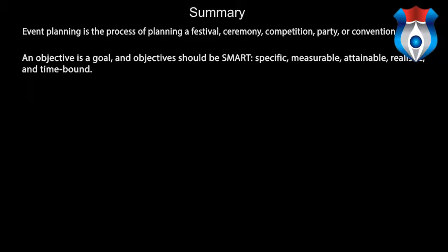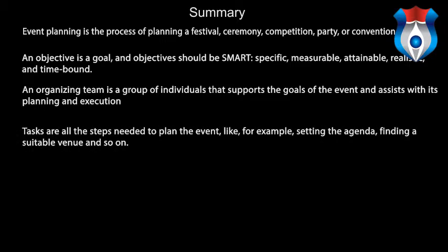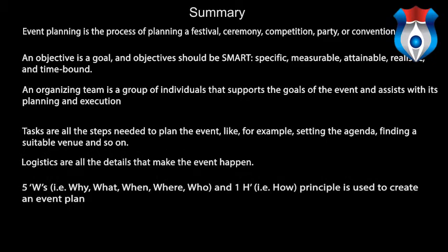In summary, event planning is the process of planning a festival, ceremony, competition, party, or convention. An objective is a goal and should be SMART: specific, measurable, attainable, realistic, and time-bound. An organization team is a group of individuals that supports the goals of the event and assists with its planning and execution. Tasks are all the steps needed to plan the event — such as setting the agenda and finding a suitable venue. Logistics are all the details that make the event happen. The 5W's — why, what, when, where, who — and 1H — how — principle is used to create an event plan.